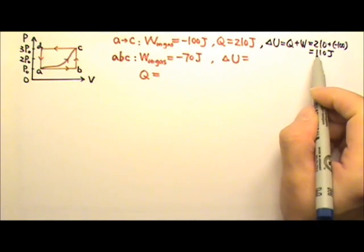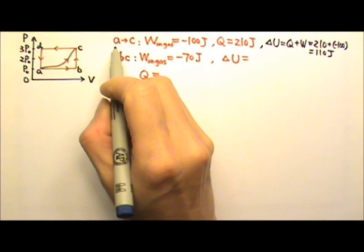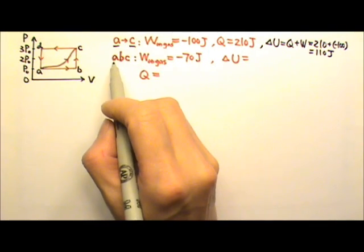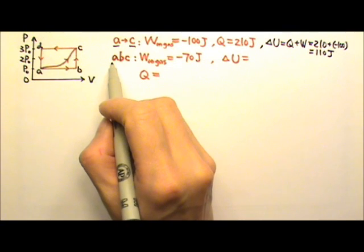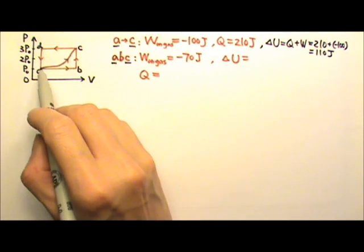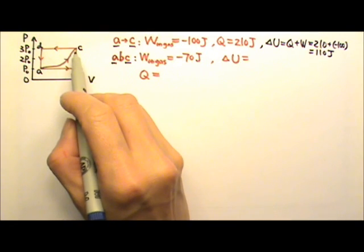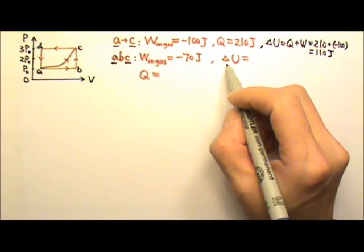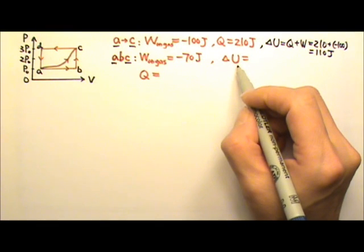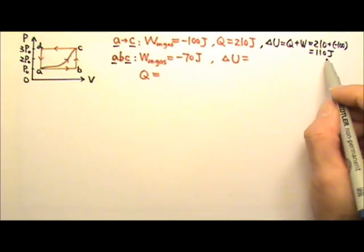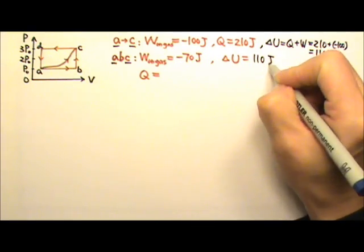This is useful because that's the delta U from A to C. For path ABC, it also starts on A and ends on C — just along a different path. But since U is a function of state, delta U does not depend on the path it takes. So for these two different paths, the delta U would be the same: 110 joules.